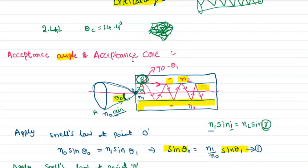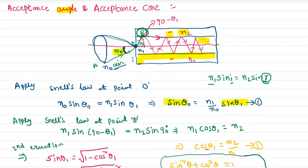The acceptance angle is the maximum angle sustained to launch the light beam into the optical fiber, and that is called the acceptance angle.